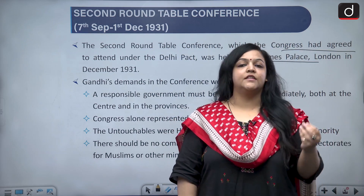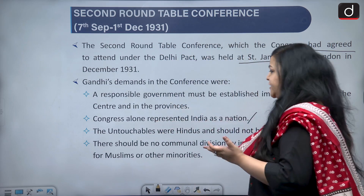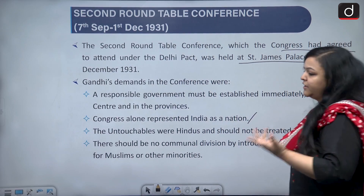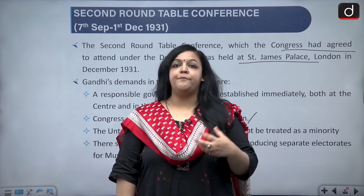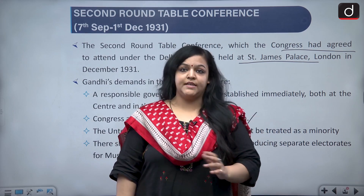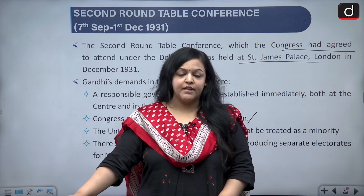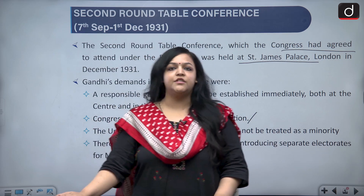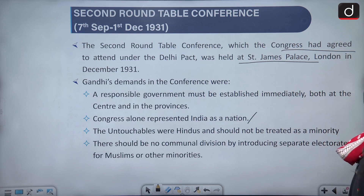Most of the other parties were representing only a certain section of the population. The British believed in divide and rule and wanted to extend separate electorates to the untouchables as well. Gandhi made his stance very clear — the untouchables are not a minority, they are Hindus, and hence they should not be treated as a minority and do not need separate electorates.